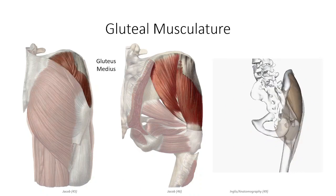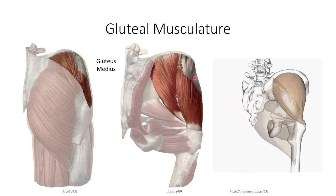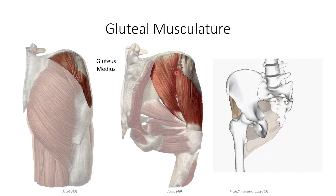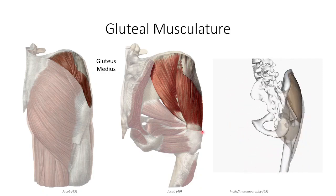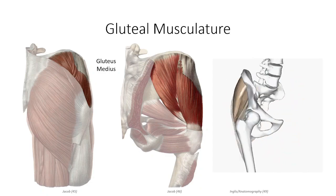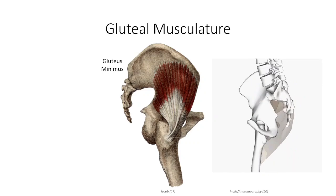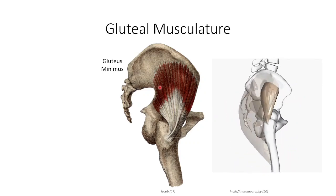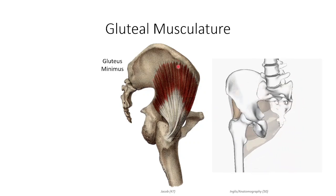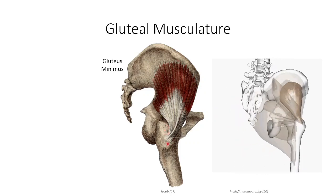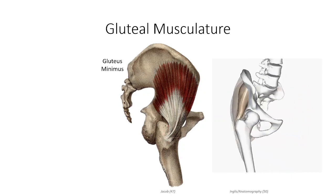Deep to the gluteus maximus is gluteus medius, which originates off the outer surface of the ilium between the posterior and anterior gluteal lines. The muscle inserts on the posterior aspect of the greater trochanter and is supplied by the superior gluteal neurovascular bundle. Deep to the gluteus medius is the gluteus minimus, which originates off the gluteal surface of the ilium inferior to the inferior gluteal lines, inserting on the anterior aspect of the greater trochanter. Like the gluteus medius, it is also supplied by the superior gluteal neurovascular bundle.